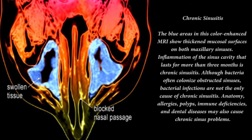Chronic sinusitis: the blue areas in this color-enhanced MRI show thickened mucosal surfaces on both maxillary sinuses. Inflammation of the sinus cavity that lasts for more than three months is chronic sinusitis. Although bacteria often colonize obstructed sinuses, bacterial infections are not the only cause. Anatomy, allergies, polyps, immune deficiencies, and dental diseases may also cause chronic sinus problems.